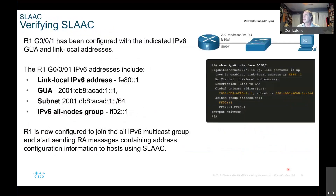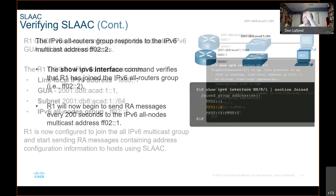We go to R1, make sure that it's configured with an IPv6 global unicast address and link-local address. It includes a link-local address, which is created automatically. Here is the address you entered, here's the subnet, and then it joined FF02::1, which is the all-nodes multicast address.